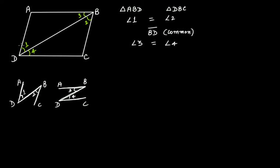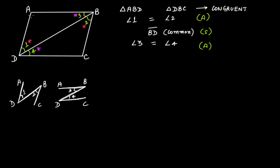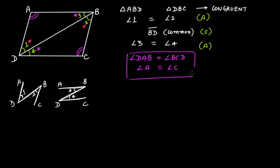So again: angle 1 is equal to angle 2 — that's the first angle. Side BD is common. And angle 3 is equal to angle 4 — the angle on the same side. So the ASA criterion is satisfied here as well, and we say these two triangles are congruent. Therefore angle DAB is equal to angle BCD, or angle A is equal to angle C. So this pair of opposite angles is also equal.